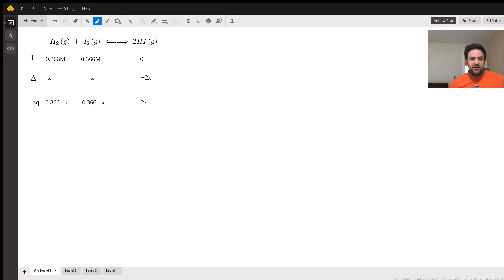As this reaction takes place, we can see from the stoichiometry that we're going to lose x amount of both H₂ and I₂, and at the same time we're going to gain 2x of HI. So our equilibrium expression for both the H₂ and I₂ shows 0.366 minus x, and the HI is 2x.